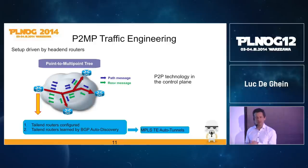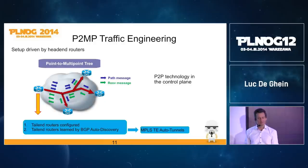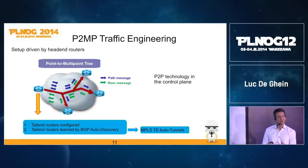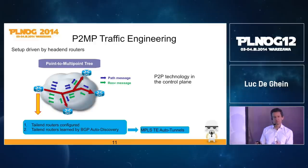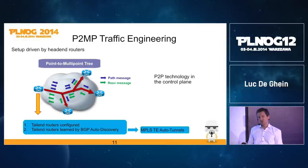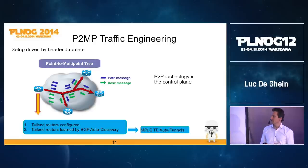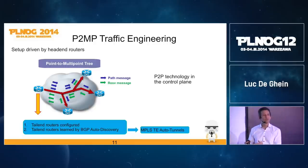The tricky part with TE signaling is that it happens end-to-end for each leg of the point-to-multipoint tree — in this case three legs. The signaling is always end-to-end, so there are a lot of path and reservation messages, generating heavy control plane traffic just to set up one point-to-multipoint tree.